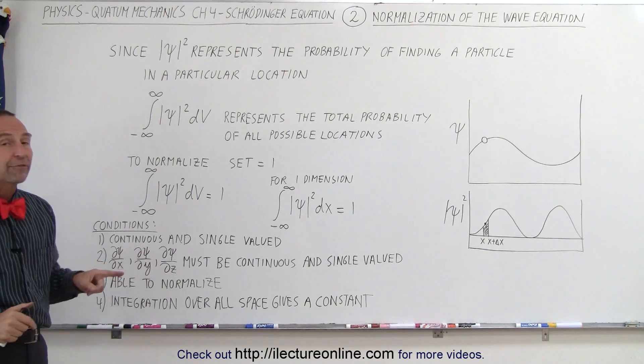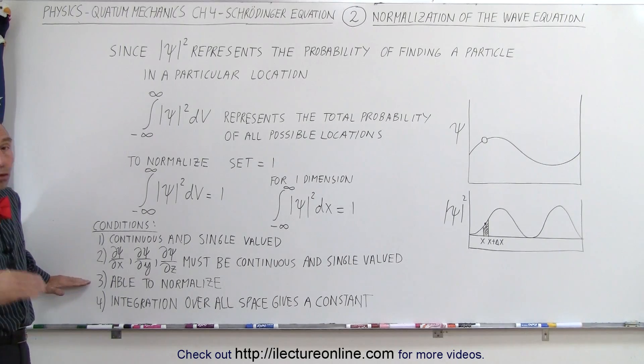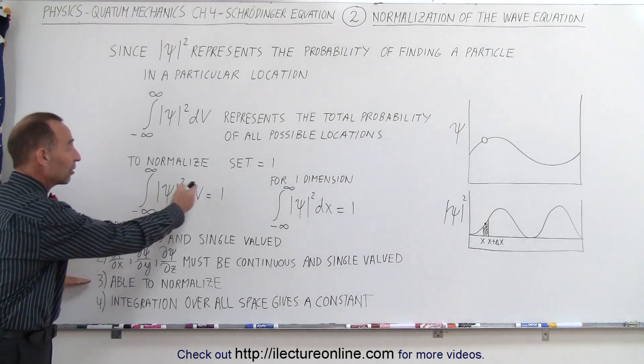Also, the derivative of the wave function must be continuous and single valued as well. We need to be able to normalize the function, just like what we explained here.